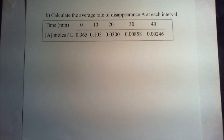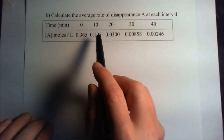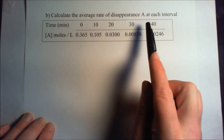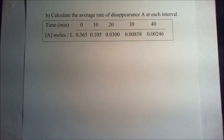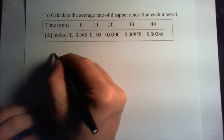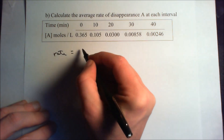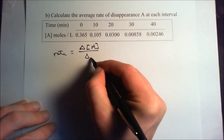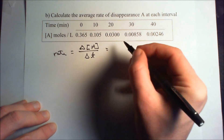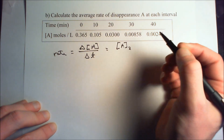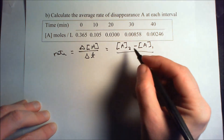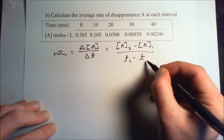Part B asks us to calculate the average rate of disappearance of A at each interval, where an interval is any difference of time. So our intervals are between 0 and 10, 10 to 20, 20 to 30, and 30 to 40 minutes. The average rate of disappearance is given by the change in concentration of A divided by the change in time — that is, concentration at time 2 minus concentration at time 1, divided by time 2 minus time 1.